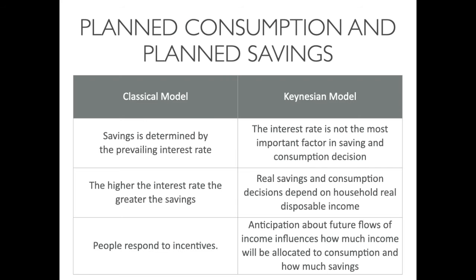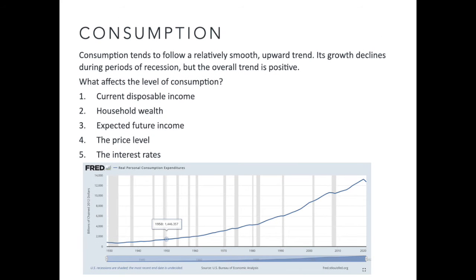A comparison of the two economic theories: the classical model identifies that savings is determined by the prevailing interest rate — with higher interest rates acting as an incentive for people to save more. The Keynesian model holds that the interest rate is not the most important factor; real savings and consumption decisions depend on household real disposable income, and anticipation about future flows of income influences how much income will be allocated to consumption and how much to savings. Over time, consumption follows a relatively smooth upward trend, with growth declining during periods of recession but the overall trend remaining positive.